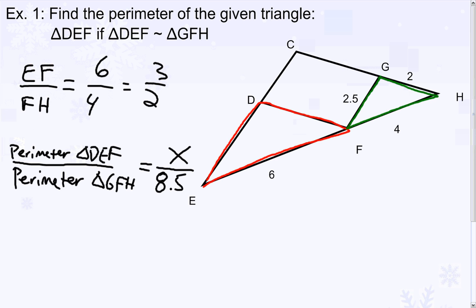The perimeter of our first triangle has to be in the same ratio as the scale factor of the corresponding sides in the two similar triangles. In this scenario, we'll cross-multiply.